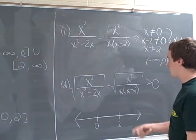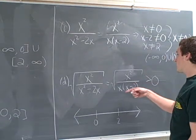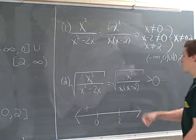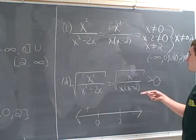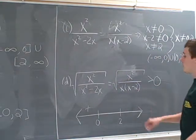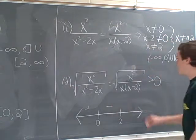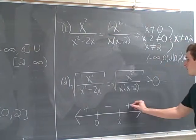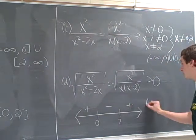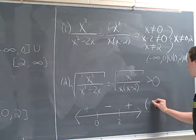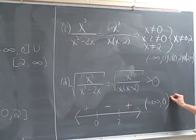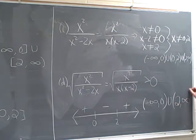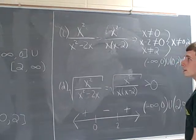We'll plug in a test point. Let's say negative 1. We'll get negative and negative so all that will come out to be positive. Plug in a 1 maybe. We'll get a negative value here. Plug in 3, 9, 3. And a positive value here. So this time our domain is going to be negative infinity to 0, non-inclusive, union 2 to infinity. And that's that problem.